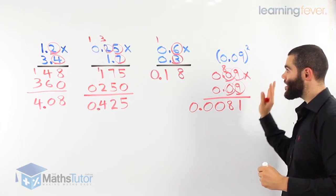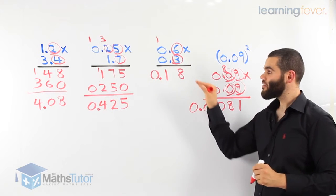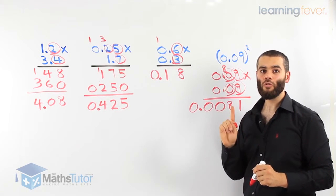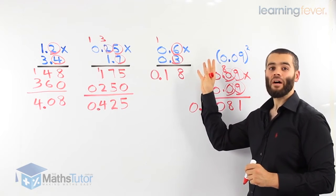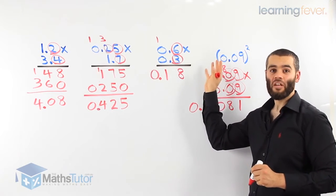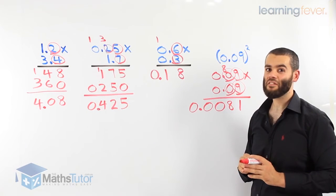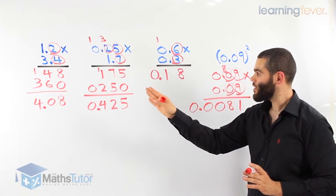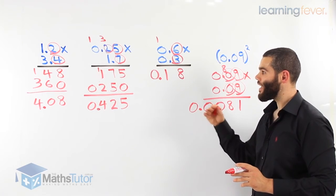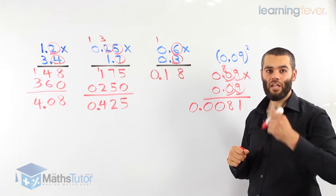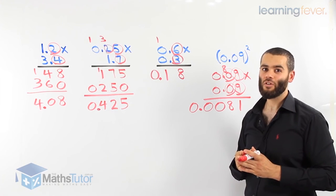As you can see, we are following the steps. It's a simple multiplication. The only rule we need to remember is that the same number of decimal places in the question is the same number of decimal places in the answer. We did four examples, and you may want to watch it again to get used to it. The more you practice, the better you're going to become.